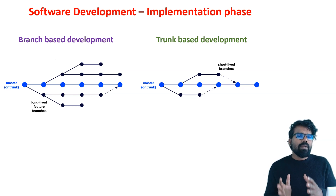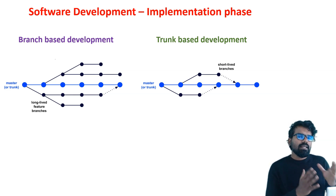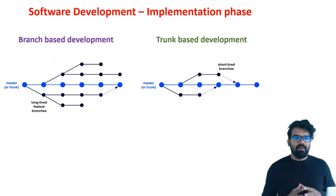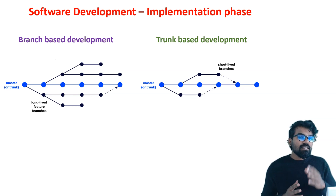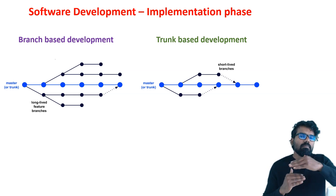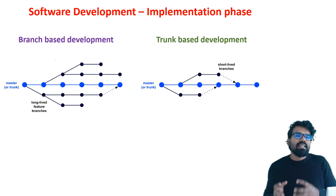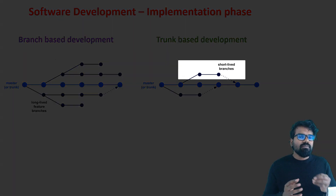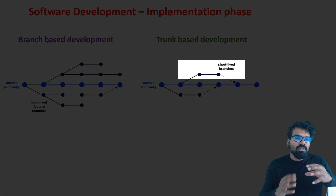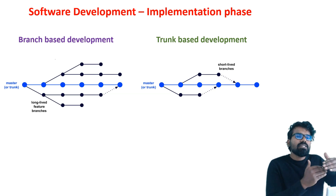This is all about traditional branch based development, and most development teams may be using this approach. Now let's look at the other strategy — trunk based development. Even in trunk based development, your source code stays in the master branch or trunk branch. The main difference is that developers tend to commit their changes directly into the master branch. There may be situations where you create some branches, do your changes, and merge, but these branches are going to be short-lived.